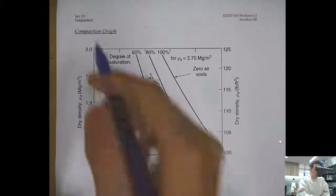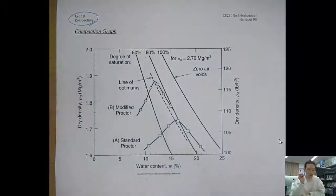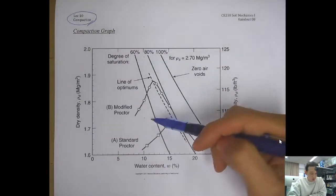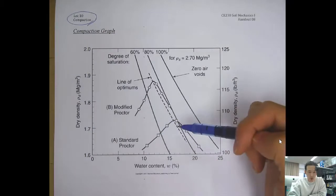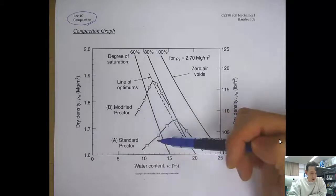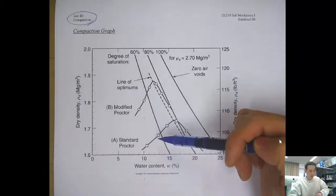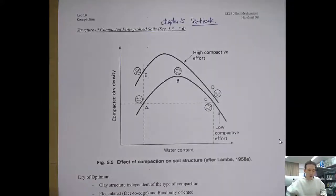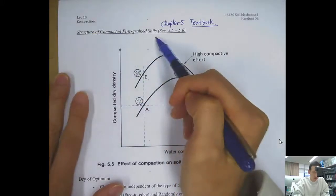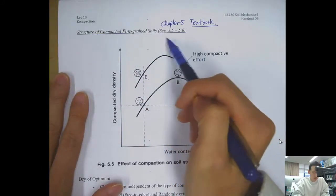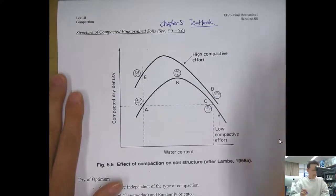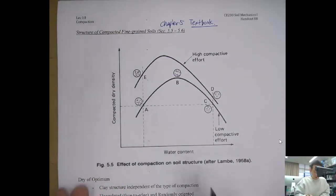Hello everyone, welcome to Lecture 10. Continuing from Lecture 9, we will talk about compaction. We've seen how to obtain the compaction curve from the laboratory Proctor test — it could be from the standard Proctor test or the modified Proctor test. Today we'll talk about the fabric and structure of the compacted fine grain soil, corresponding to Chapter 5, sections 5.5 to 5.6.